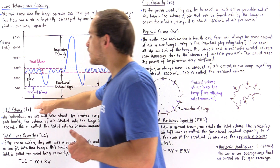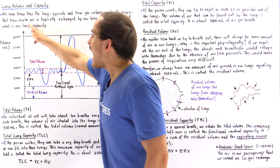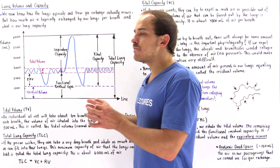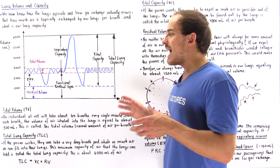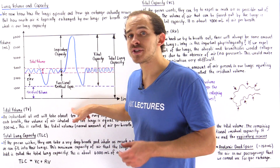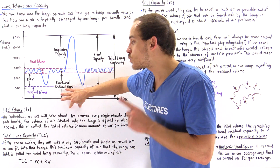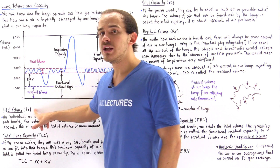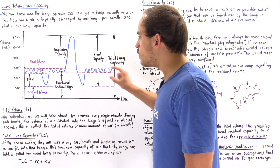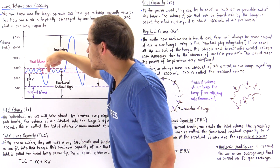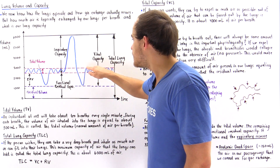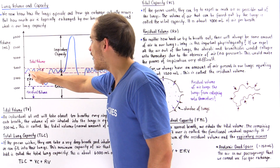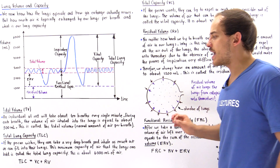Let's begin by describing something called the tidal volume. We asked how much air on average is exchanged by our lungs when the individual is at rest every single time we take a breath. At rest we take about 10 breaths every minute, and every one of these breaths exchanges about 500 milliliters of air — this is what we call the tidal volume. It is the portion between the top line and the bottom line of these normal breathing fluctuations.